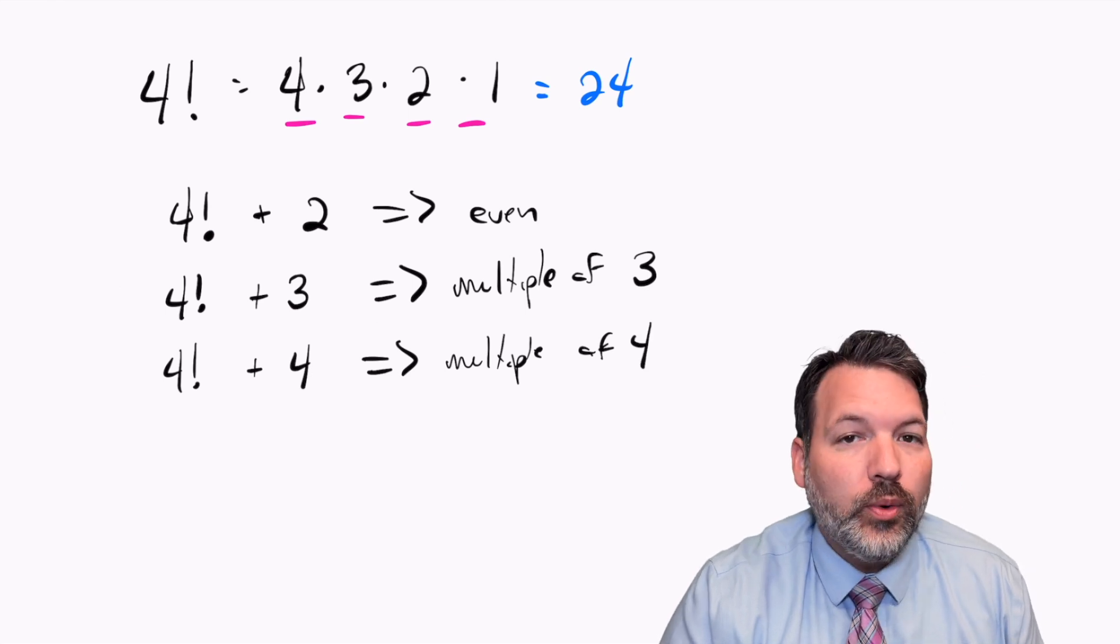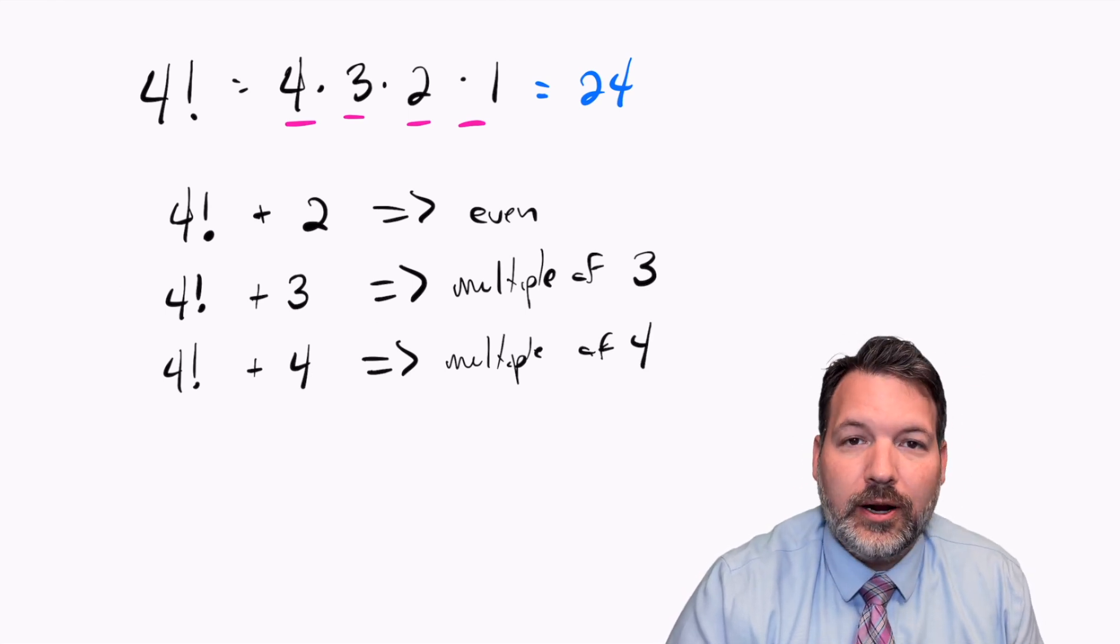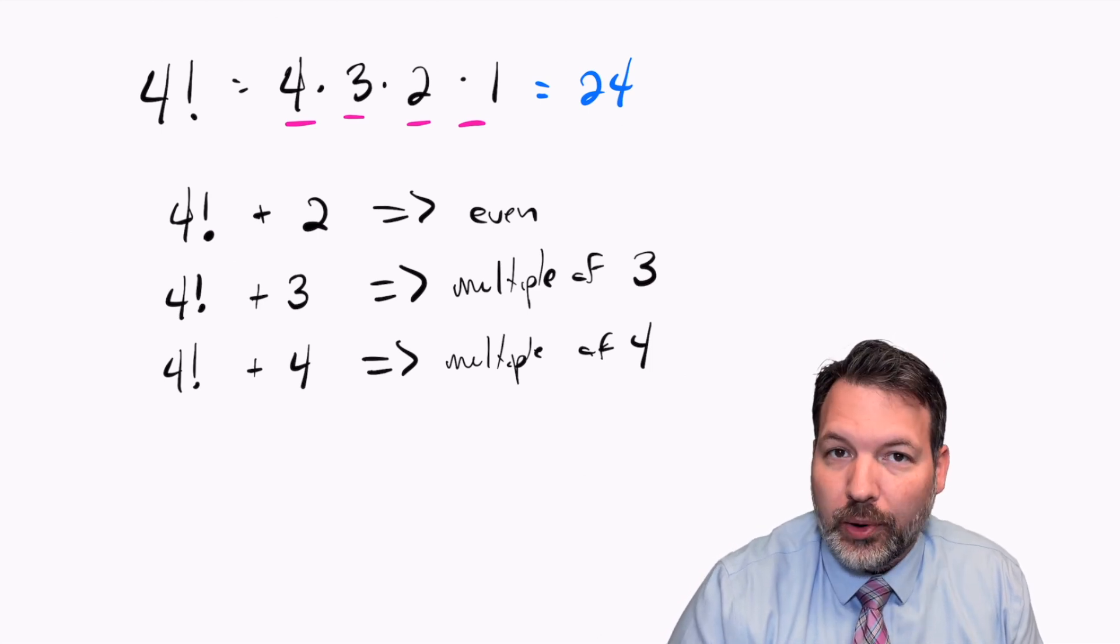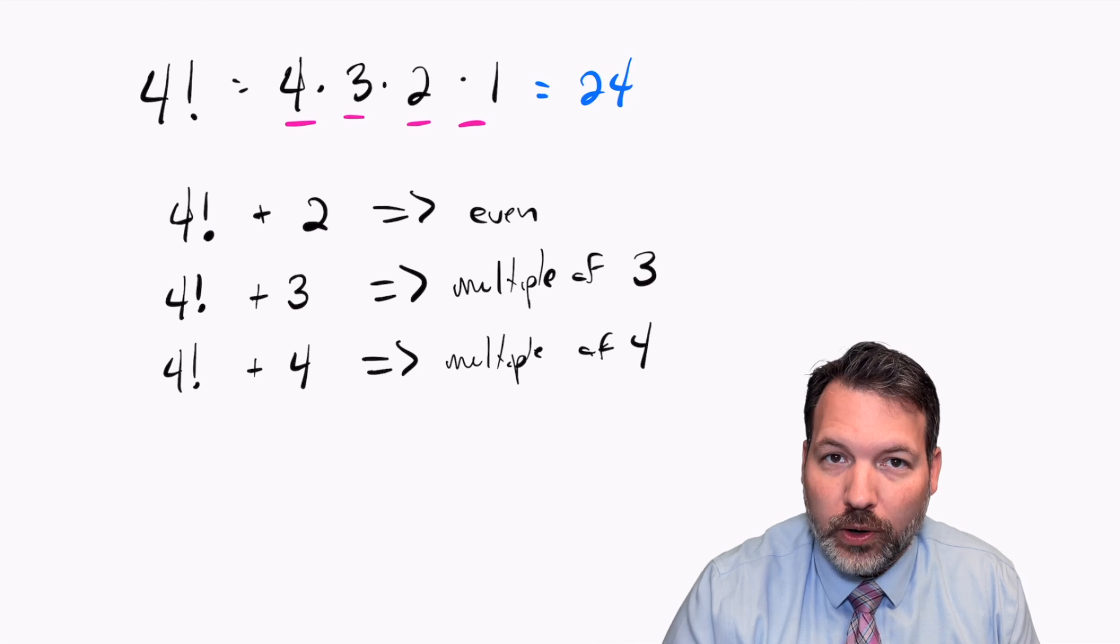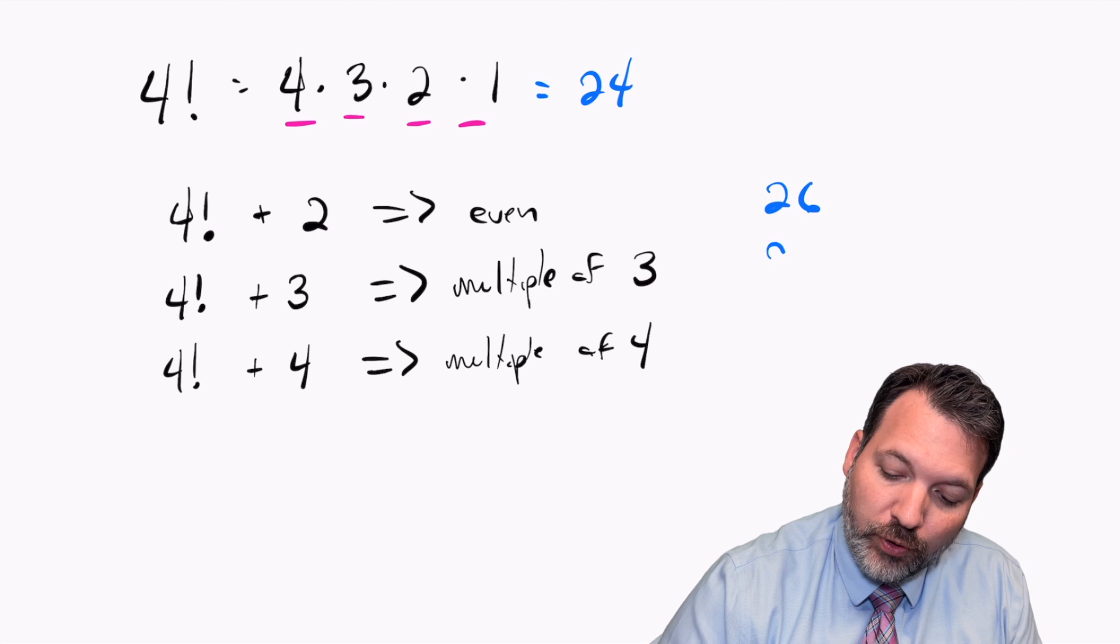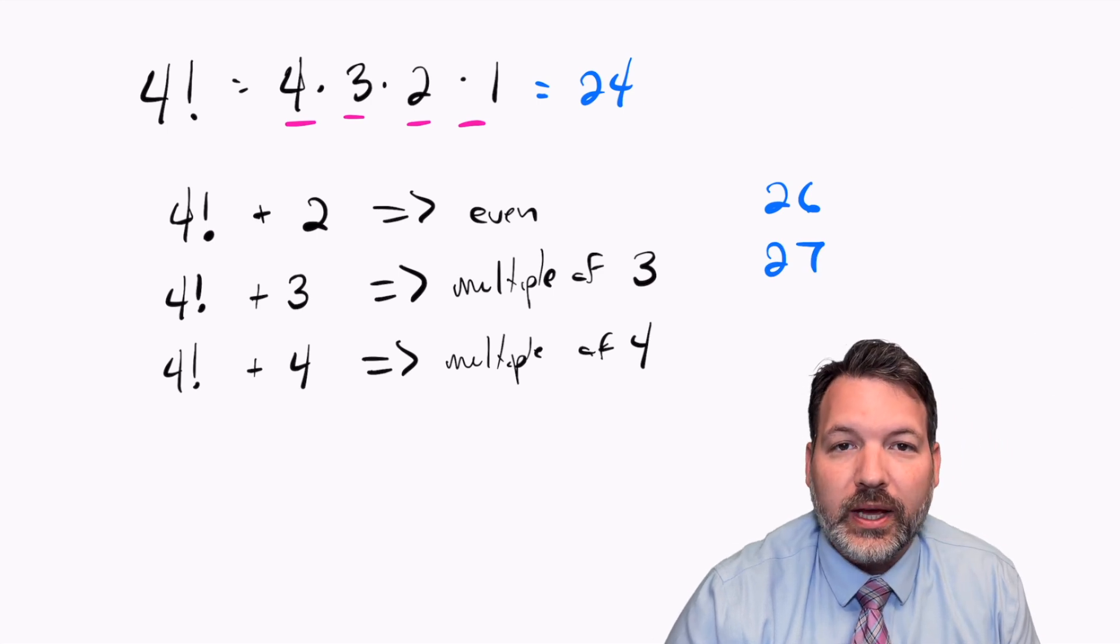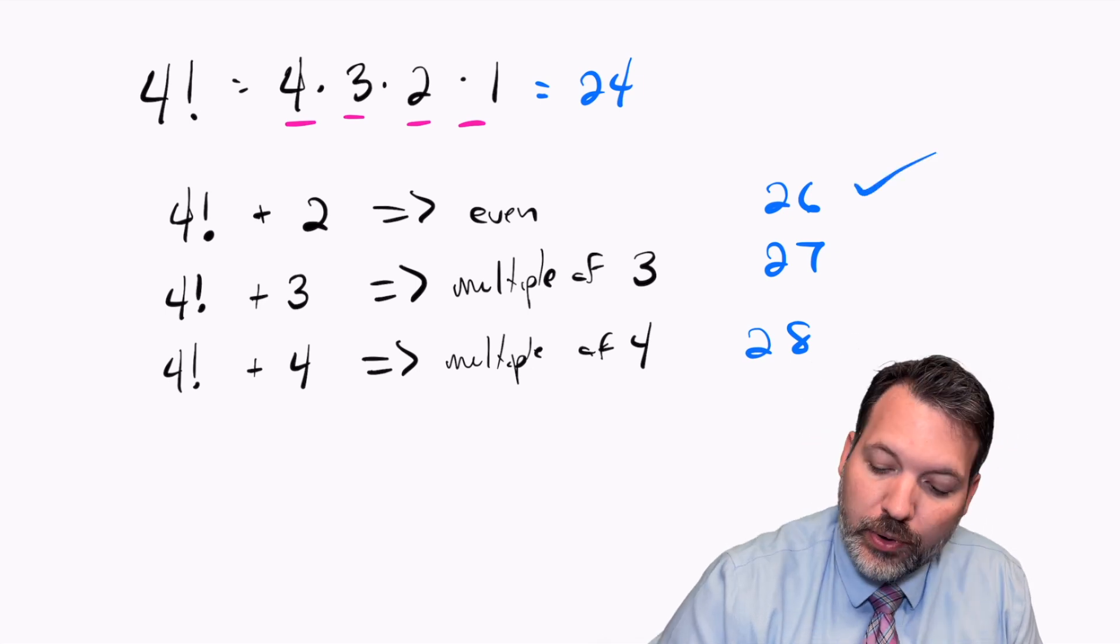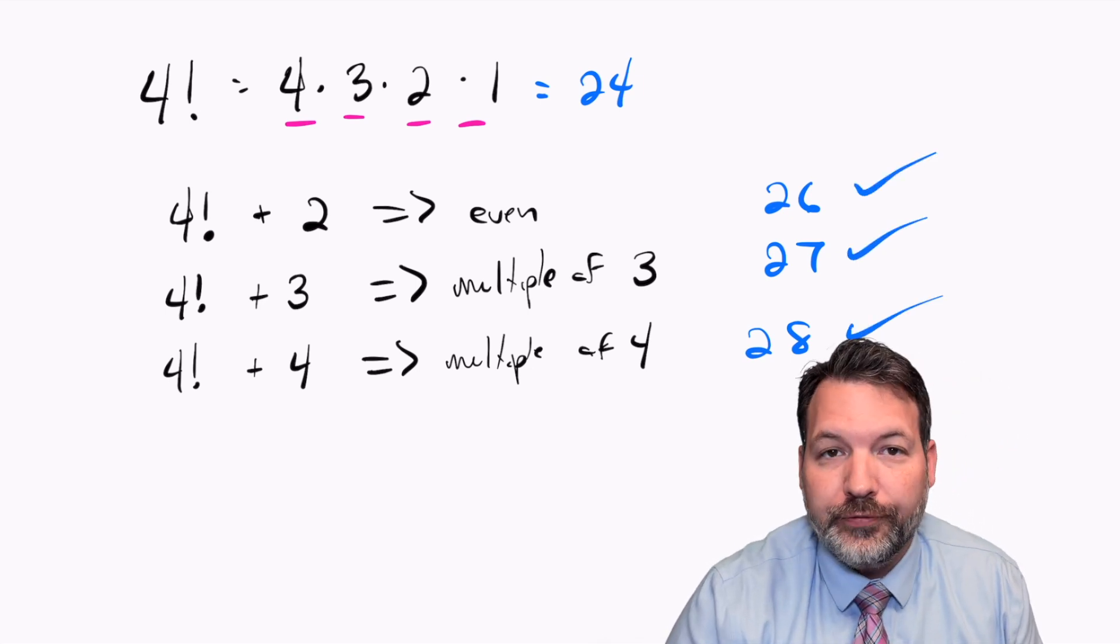Now, like I said, we know what 4 factorial is. So it's not terribly hard to actually compute these numbers and prove to ourselves that they are even, a multiple of 3, and a multiple of 4. 4 factorial plus 2, for example, is the same thing as 26. 4 factorial plus 3 is the same thing as 27. And 4 factorial plus 4 is the same thing as 28. Even number, multiple of 3, multiple of 4.